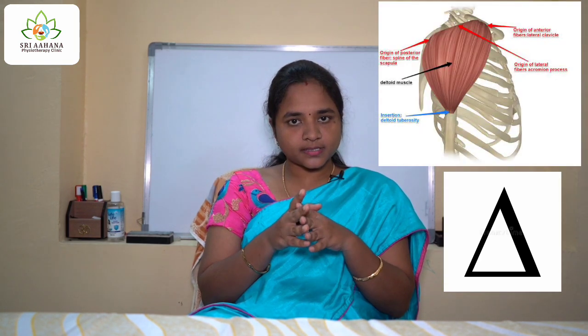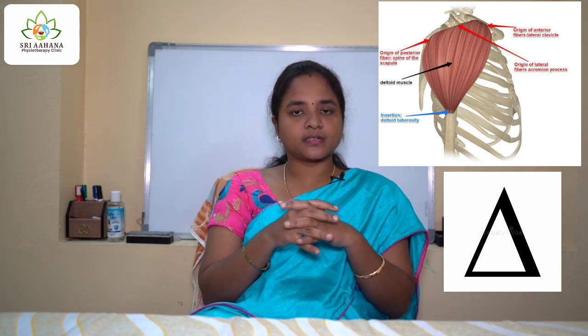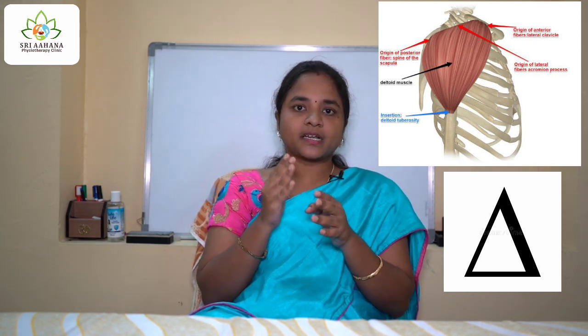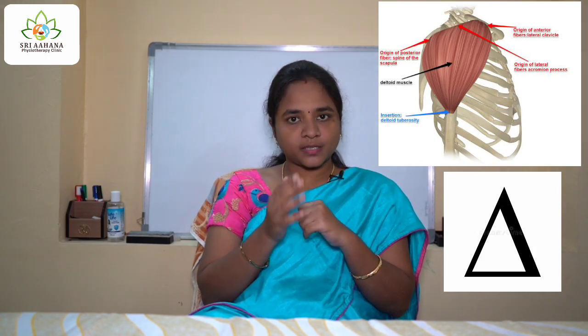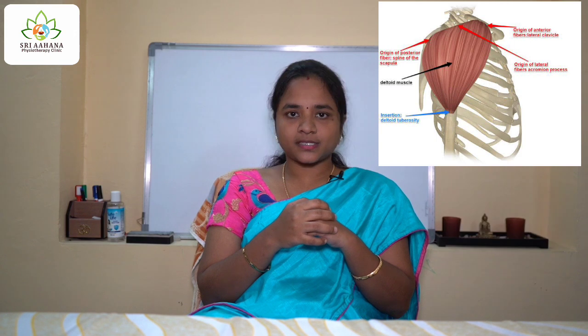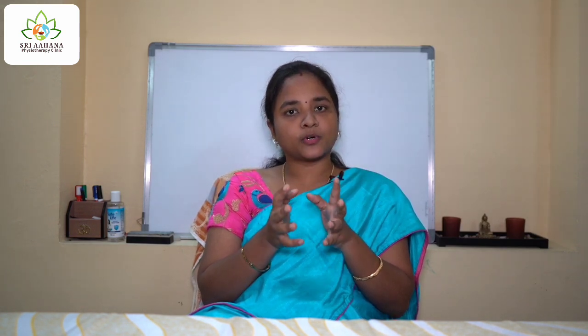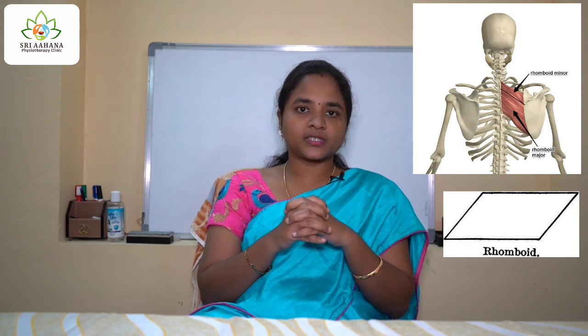For example, the trapezius muscle looks exactly in the shape of a trapezium, so it derives its name from that shape. The next muscle is the deltoid, which is a triangular shaped muscle. Seeing the picture will make it easy to remember both the shape and location of the muscle. The next muscle is the rhomboids, which exactly resembles a rhomboidal shape, and is therefore termed rhomboids.